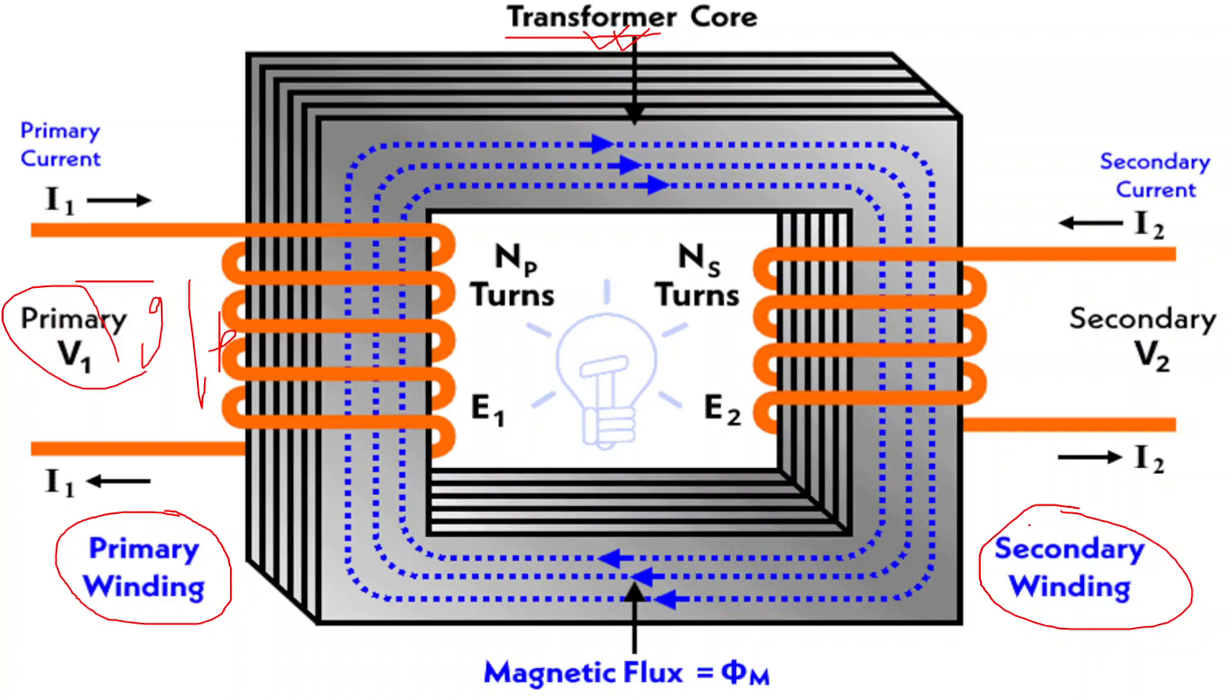The working principle is that when AC voltage is applied to the primary coil, it creates a changing magnetic field around the coil. This changing magnetic field induces a voltage in the secondary coil through electromagnetic induction.